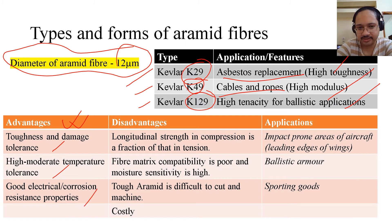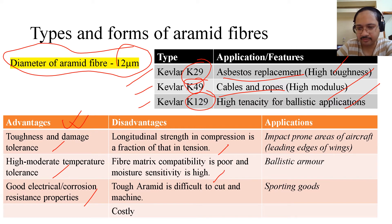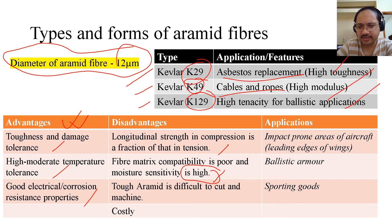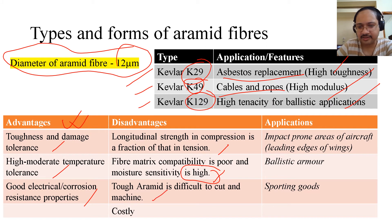Advantages include toughness and damage tolerance, high moderate-temperature tolerance, and good electrical and corrosion resistance. Disadvantages: longitudinal compressive strength is a fraction of its tensile strength, fiber-matrix compatibility is poor, moisture sensitivity is high — similar to glass fiber — aramid is difficult to cut and machine, and it is costly.